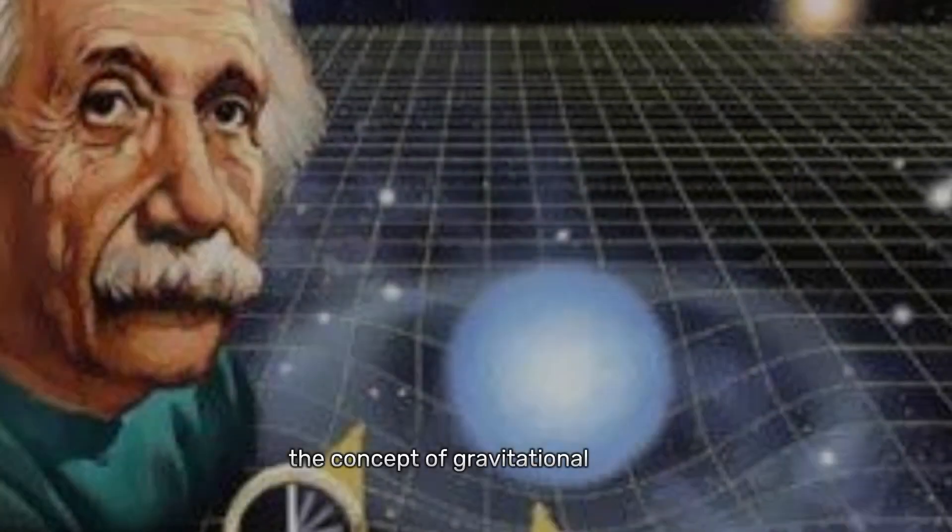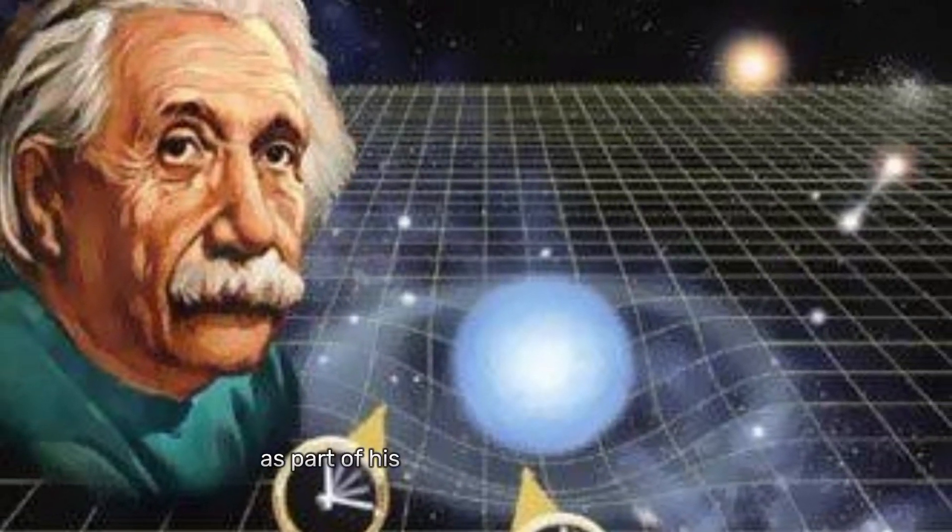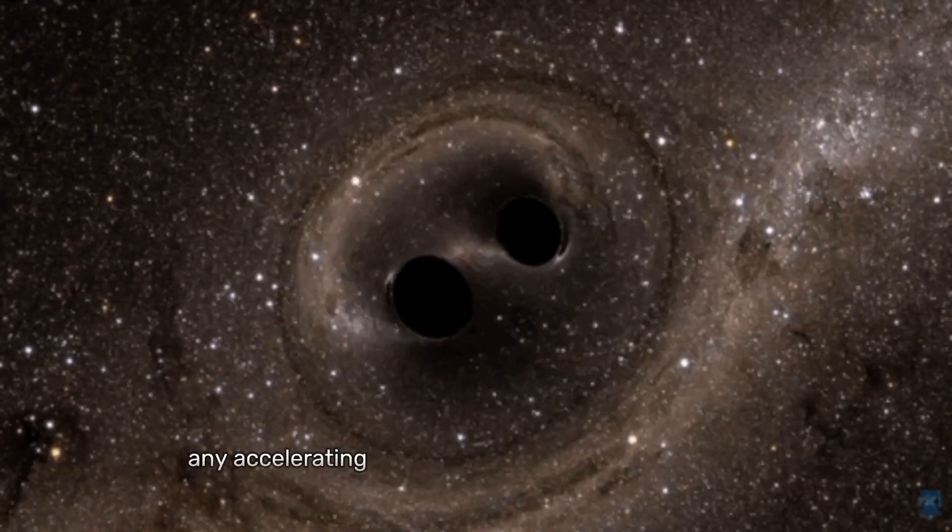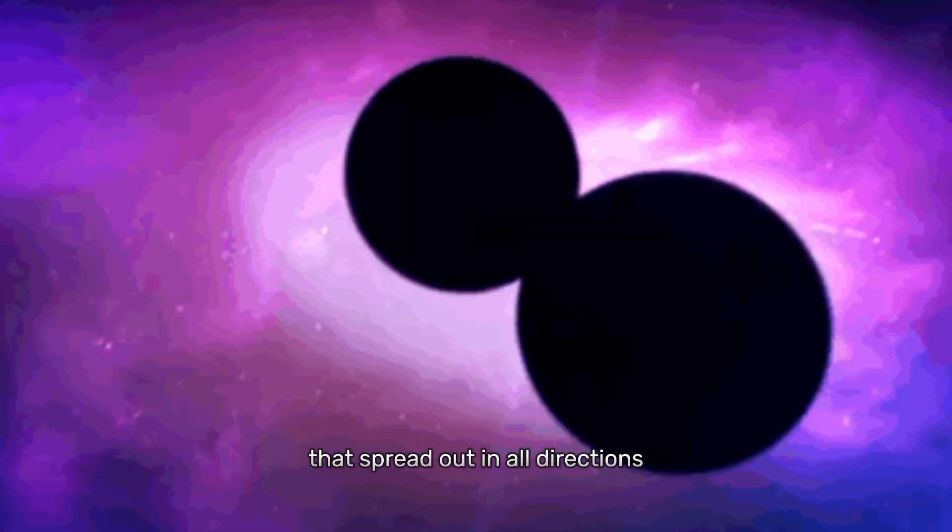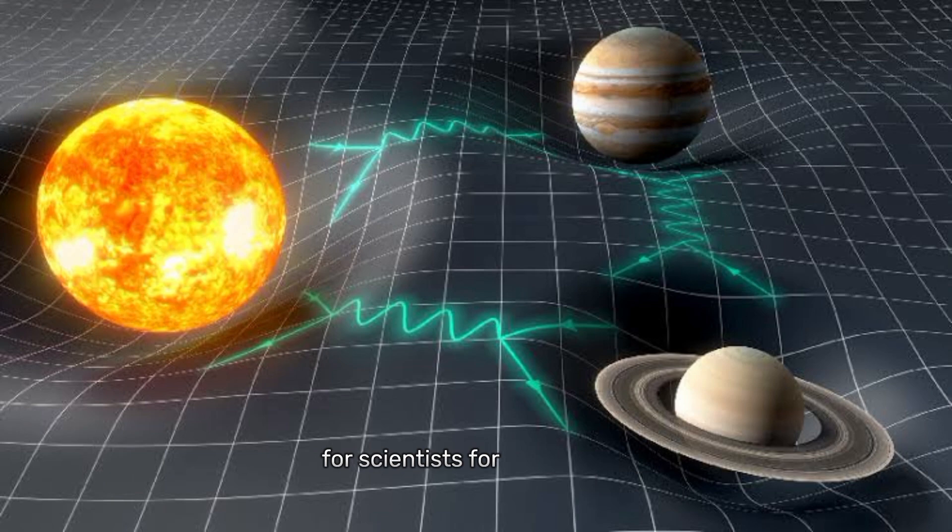The concept of gravitational waves was first predicted by Albert Einstein in 1916 as part of his theory of general relativity. According to Einstein, any accelerating mass produces ripples in spacetime that spread out in all directions like ripples in a pond after a stone is thrown in. However, these ripples are incredibly weak, and detecting them has been a significant challenge for scientists for many years.